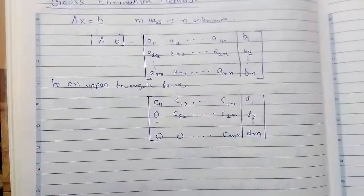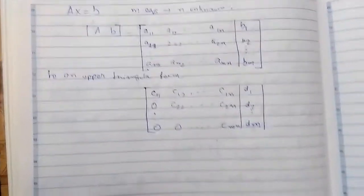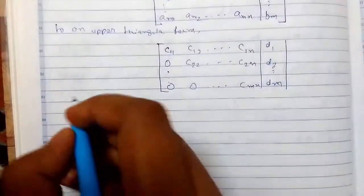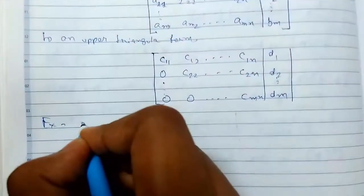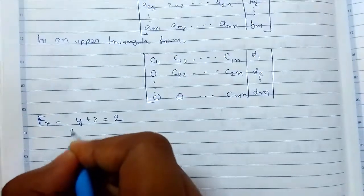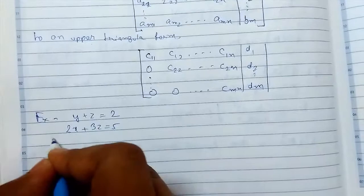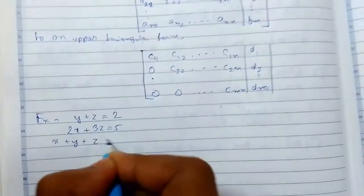This elimination process is also known as forward elimination method. So let us see an example to understand everything. Example - suppose we have system of equations: y plus z equals 2, 2x plus 3z equals 5, and x plus y plus z equals 3.